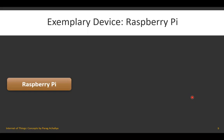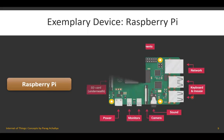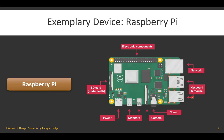Now we will see the block diagram or structure of Raspberry Pi. The green board is your Raspberry Pi. On top you can see 40 pins, which are responsible for connecting various sensors, actuators, power supply, and ground connections.